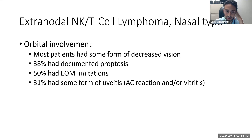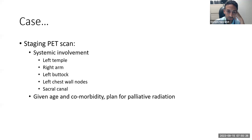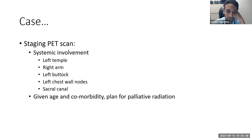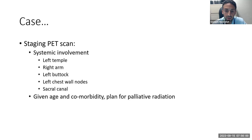Going back to the case: PET scan staging identified systemic involvement in the left temple, right arm, left buttock, left chest — with some nodes — and in the sacral canal. The patient was seen by oncology, radiation oncology, and geriatric oncology. Given his advanced age and comorbidities, the plan was for palliative radiation, with ongoing discussion of care and follow-up.